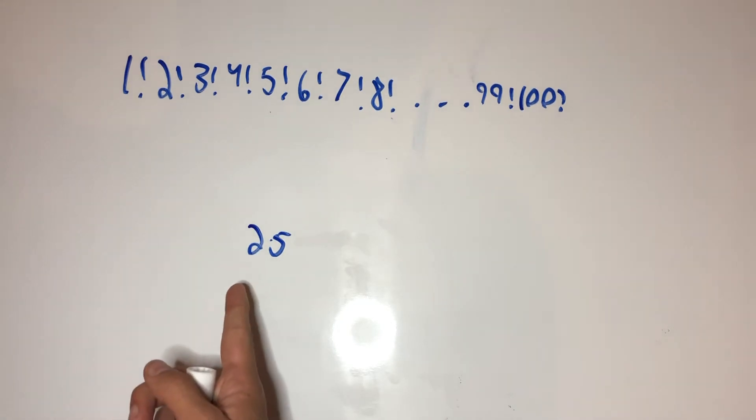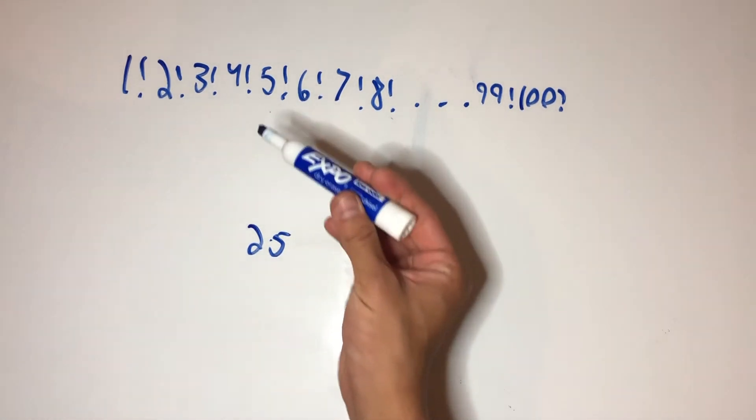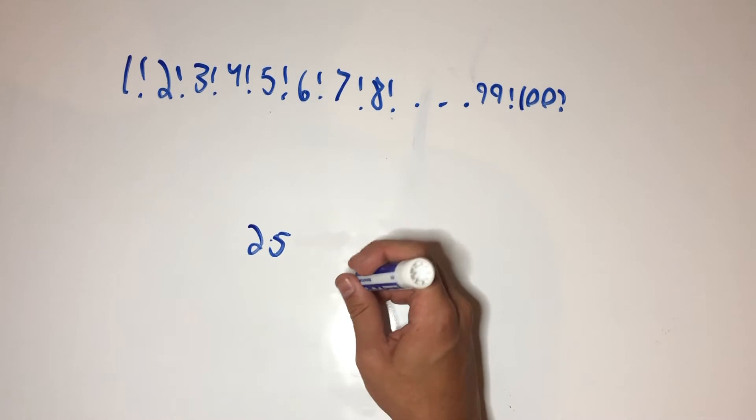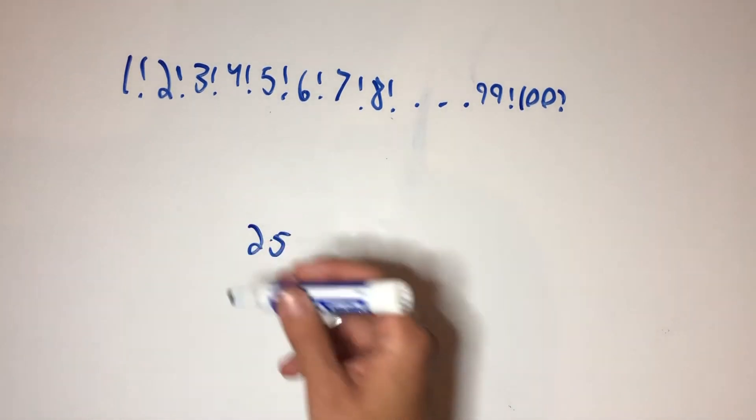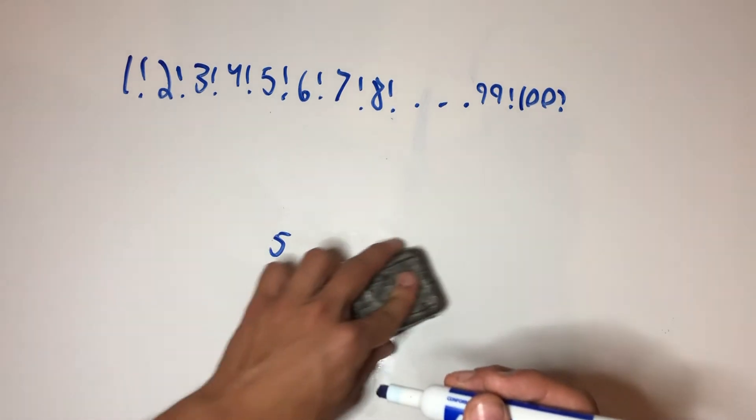We need to have a 2 times a 5 in order to get a 10. Now, this 2 is really just extra, because if we look at a factorial, for every 5 that we come across, we will already have come across a 2 before it. So we don't really need to worry about finding how many 2's there are, as long as we find how many 5's there are.